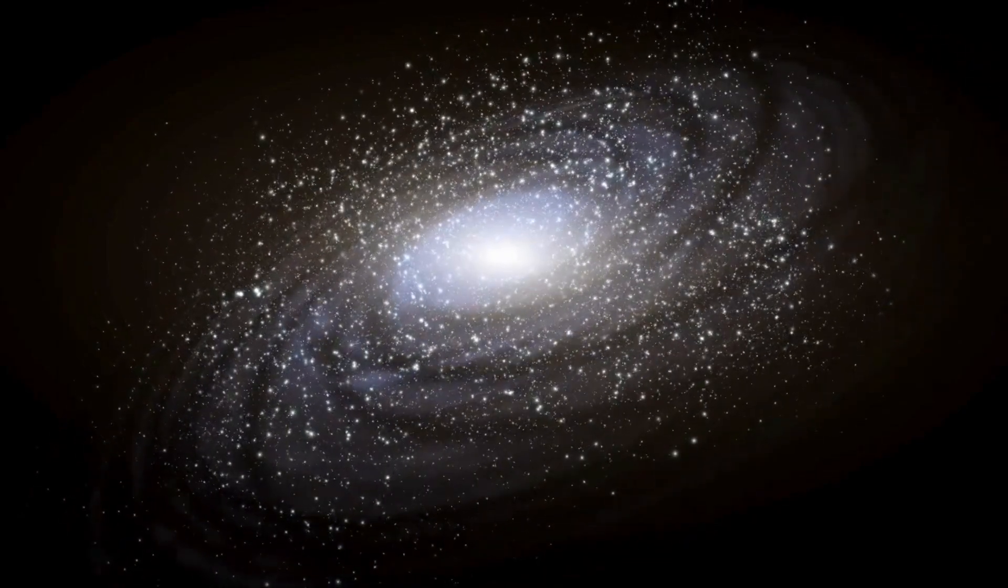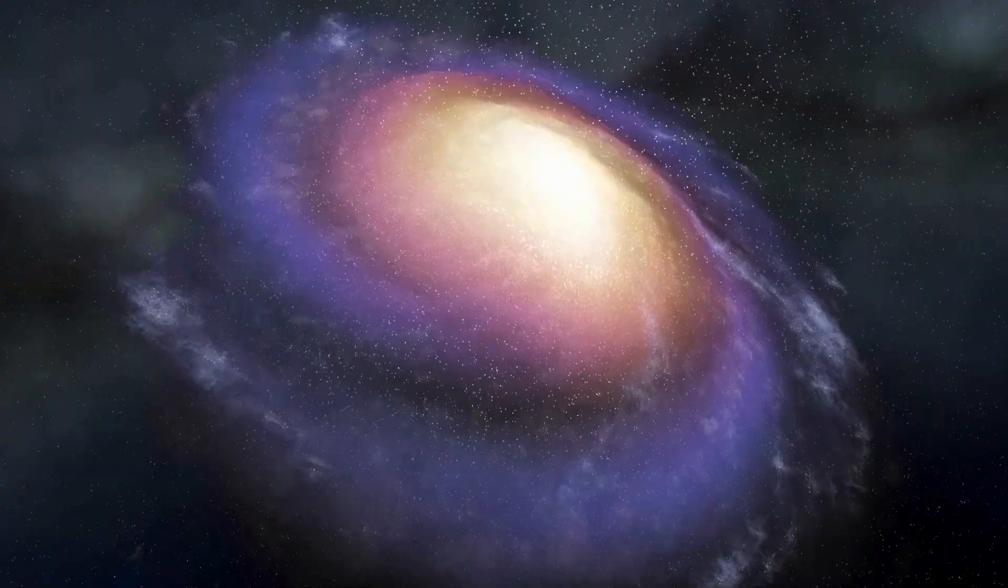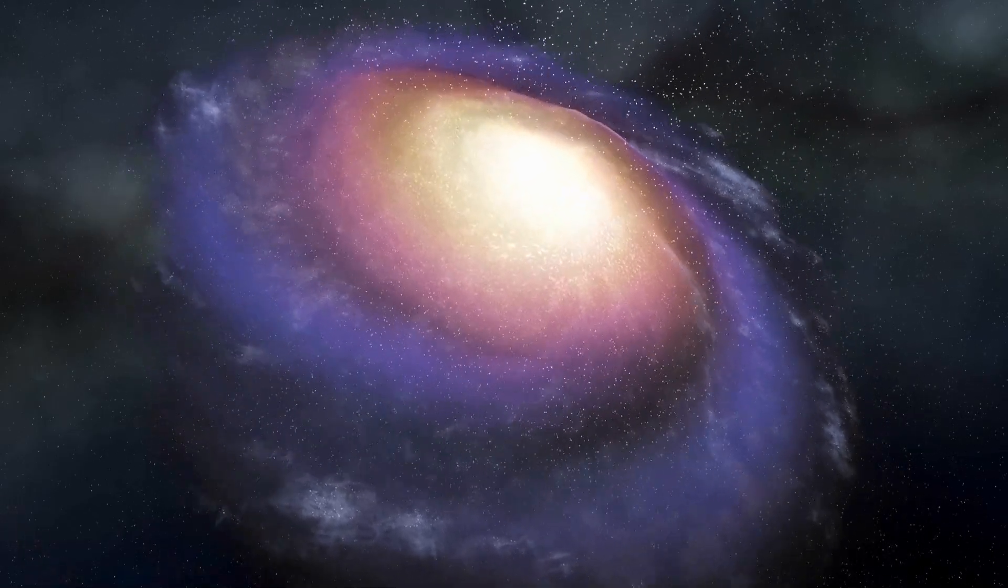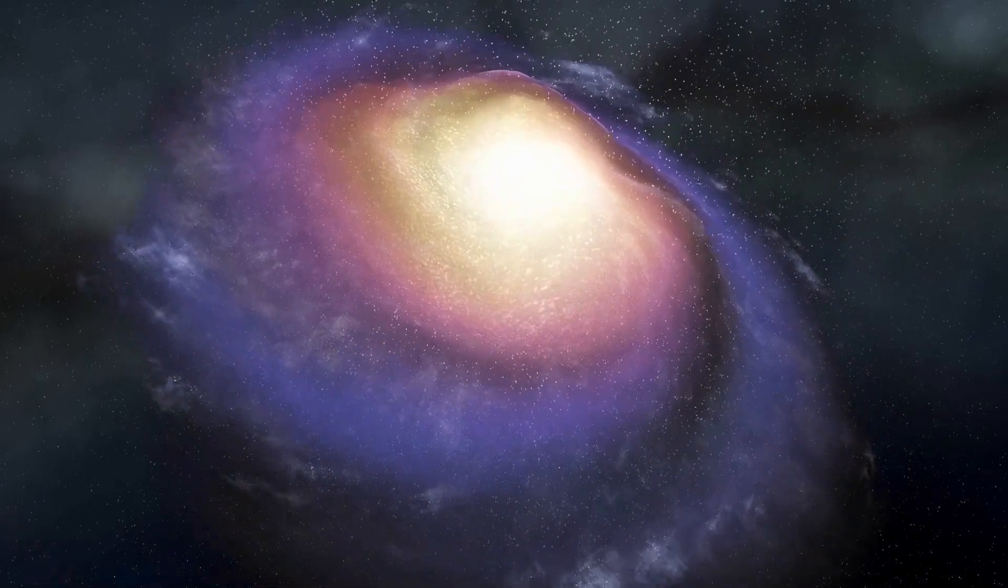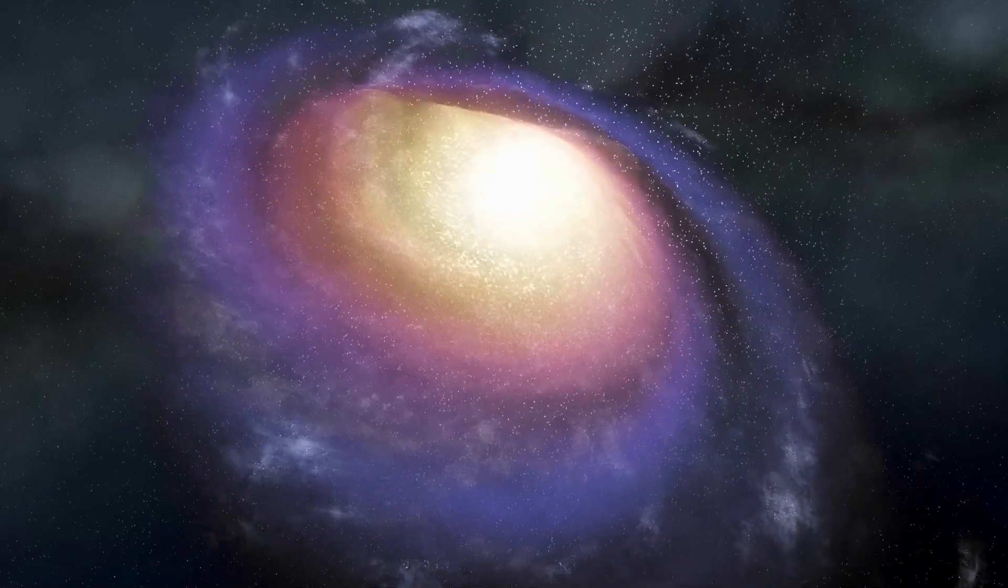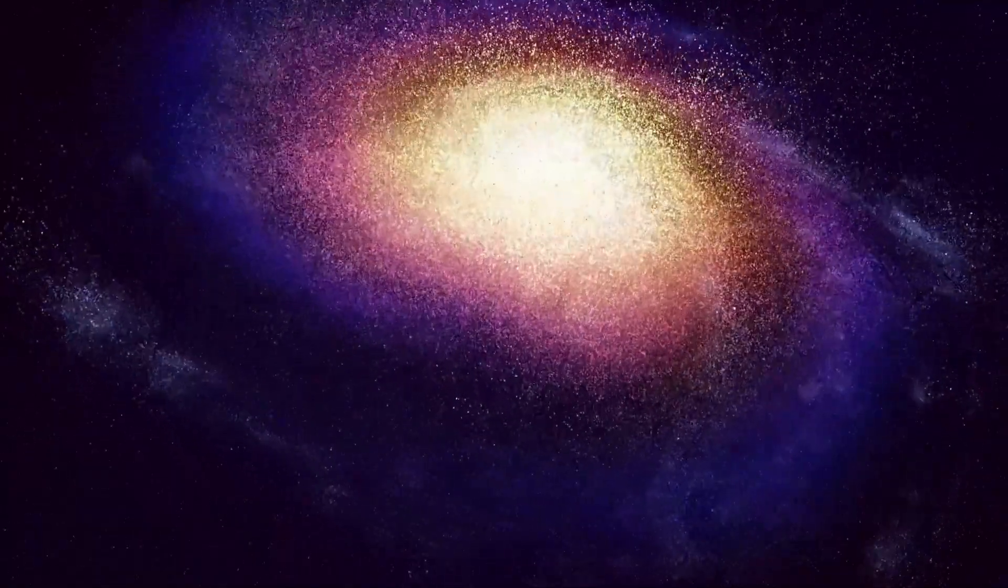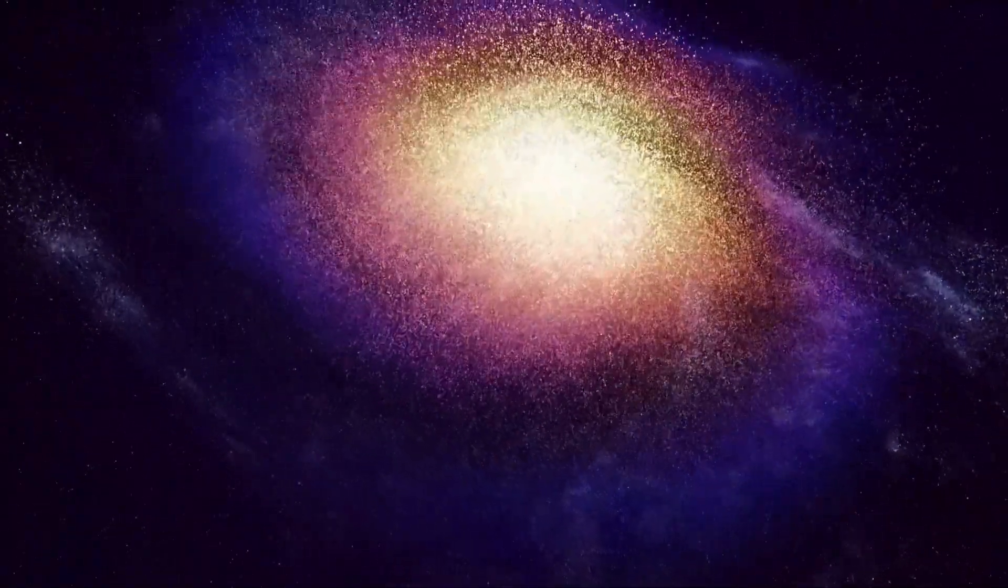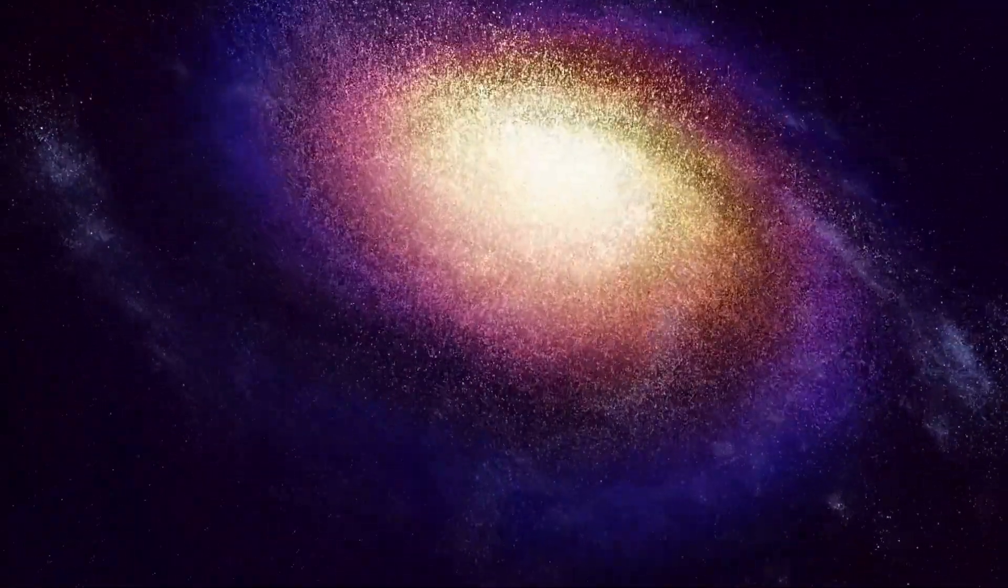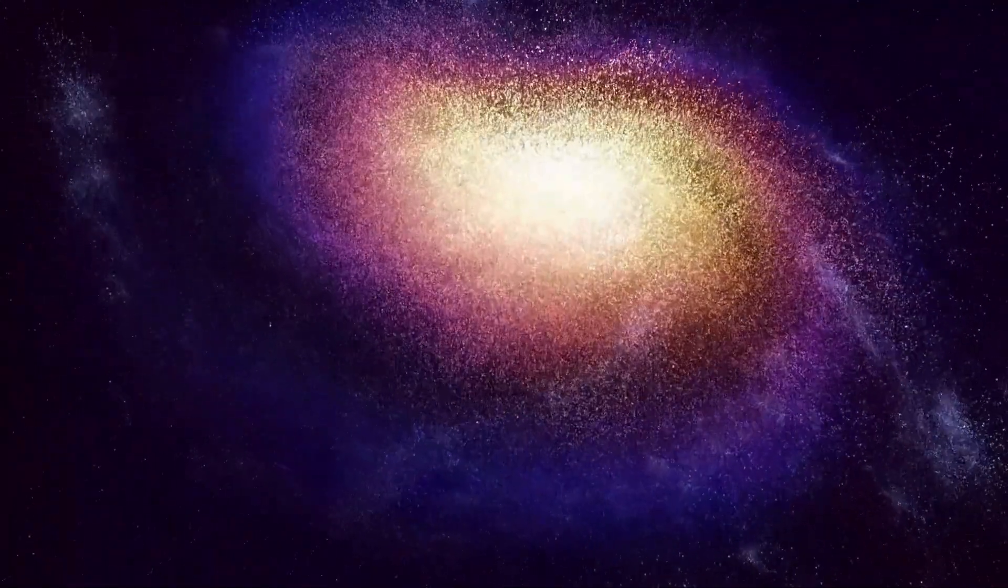In terms of age, Betelgeuse, at roughly 10 million years old, pales in comparison to our sun, which boasts an age of approximately 4.6 billion years. Despite its youth in astronomical terms, Betelgeuse has already undergone stellar evolution, reaching a stage where it behaves as a fully developed star, displaying the characteristics of an aging red supergiant.